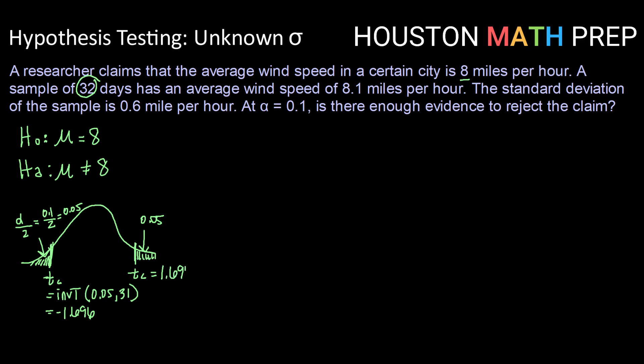And that means that the upper critical value will be the same value but positive. So 1.696. Okay, now that we've got our t-critical value, let's calculate our test statistic. So our t-star, or our test statistic, can be found by taking x-bar minus mu and dividing by s over the square root of n.